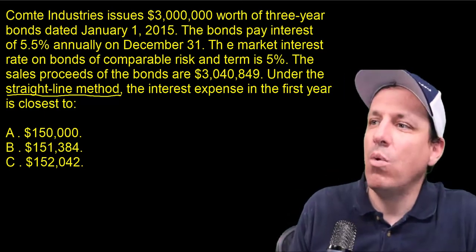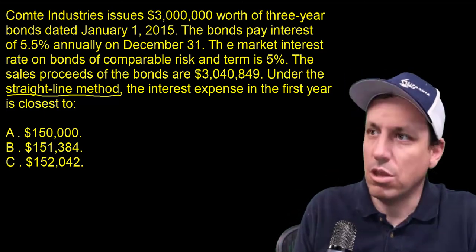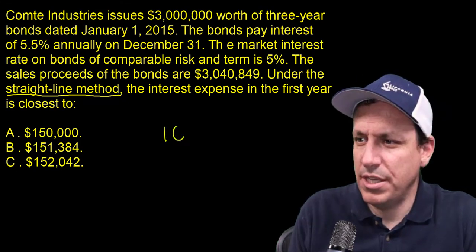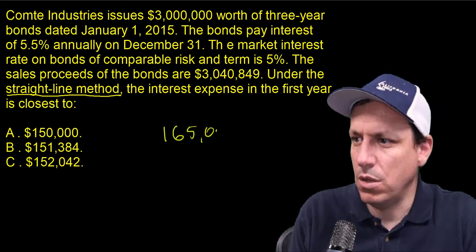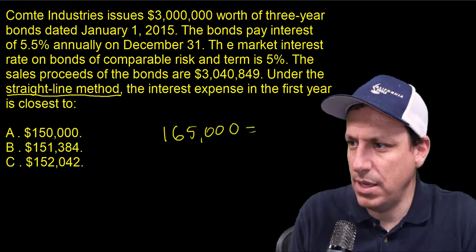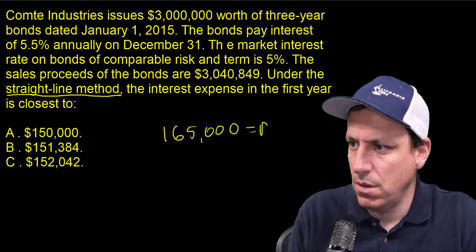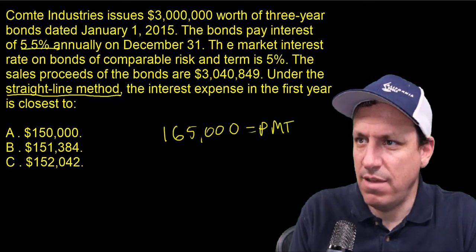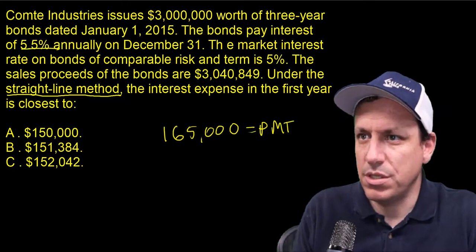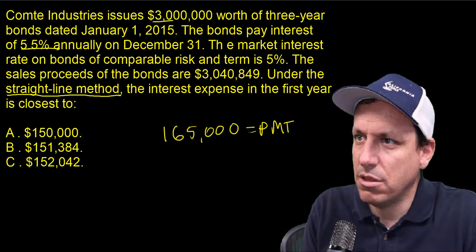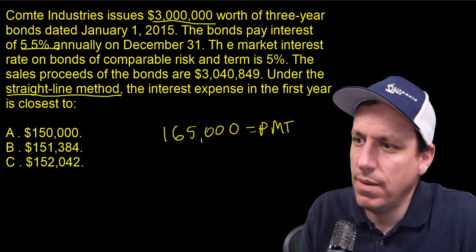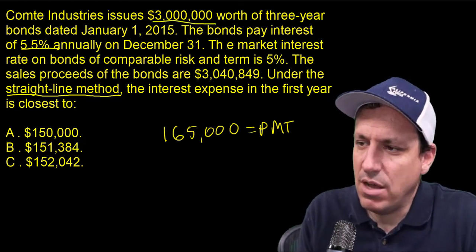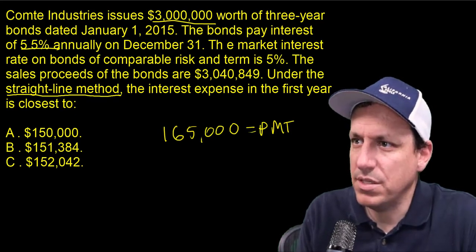So what's our coupon payment? The $3 million times 5.5% — that is going to be $165,000. That is what our payment is. That is the 5.5% bond coupon interest times that $3 million. So $165,000 is what the payment is going to be.